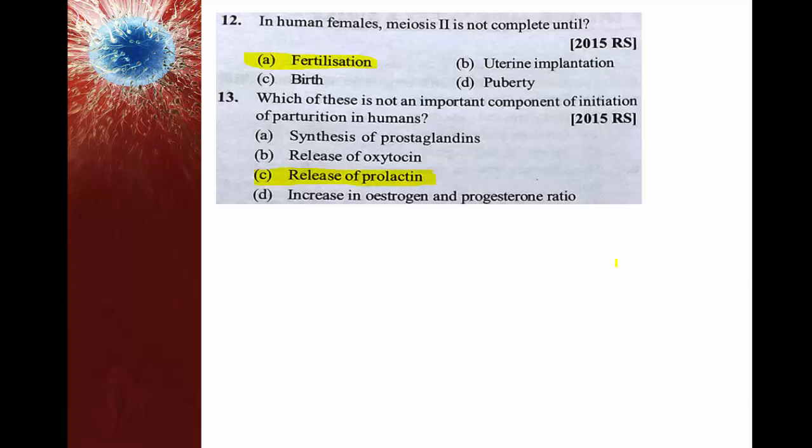Prostaglandins are secreted not only at the time of parturition but also during the menstrual cycle. Under their influence, shedding of the endometrium occurs, and cramps/pain during the menstrual cycle are also produced due to prostaglandins. So the right option for this question is option C — release of prolactin is not a component of initiating parturition.